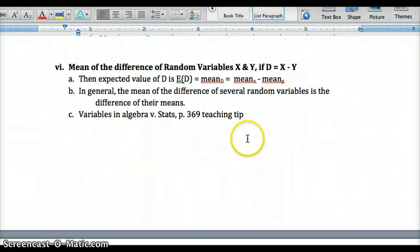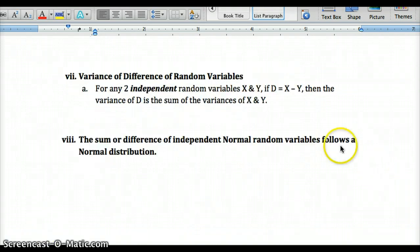Mean of the difference of random variables, we would subtract the two means. So for subtracting, like in the salary example, we subtracted men's salaries from women's salaries. We would then subtract the mean of the men's salaries from the mean of the women's salaries to get the mean of our new data set. And then if we subtract, we know that the variances still add. So when subtracting two data sets, the means subtract, the variances add. Remember, more variables, more variance.